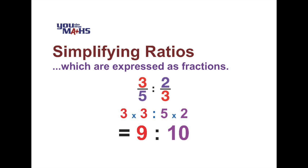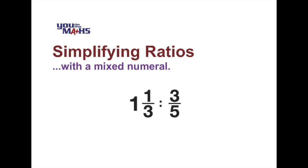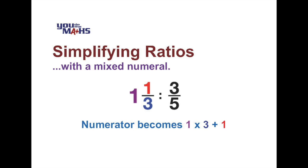Let's have a look now where one of the numbers in the ratio is expressed as a mixed numeral. So in this case we've got one and one third. What we'll do is we'll change this to an improper fraction, and we do that by multiplying the denominator, in this case three, by the whole number one, and then we add the numerator which in this case is also one. So that means that the improper fraction on the left hand side becomes four over three.